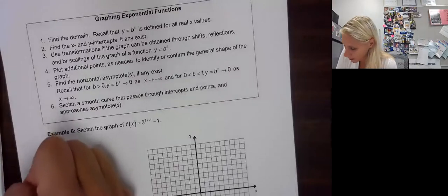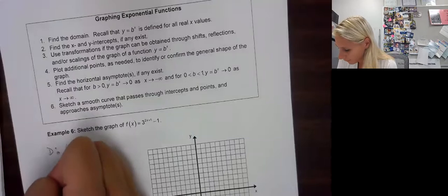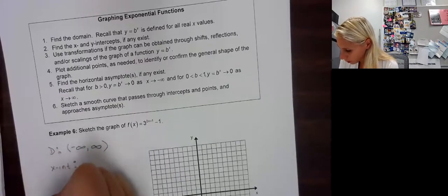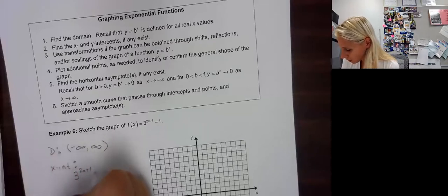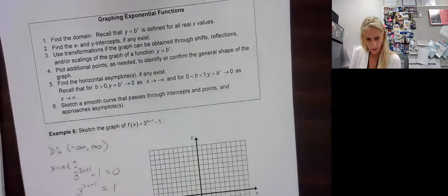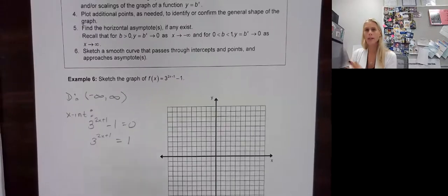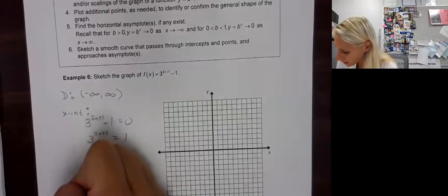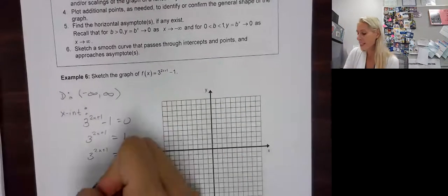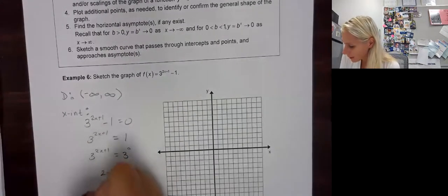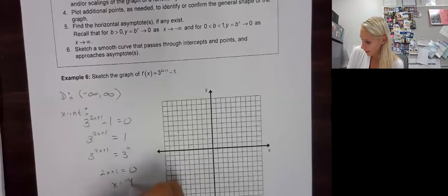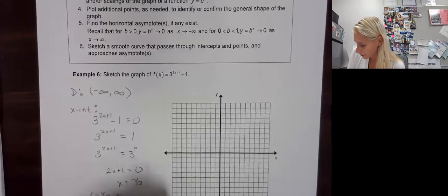So let's think of this. The domain. Remember the domain for an exponential is negative infinity to infinity. To find the x-intercepts, we set our equation equal to 0. 3 to the 2x plus 1 minus 1 equals 0. So then we solve. Now think of this. This is the tricky part here. Like, wait a second. We can't get the bases to be the same. But we can because 3 to the 2x plus 1 stays the same. But 3 to the what would equal 1? 3 to the 0. That was a trick right there. So set the exponents equal. We get x equals negative 1 half. So remember that's a coordinate pair. So negative 1 half comma 0.